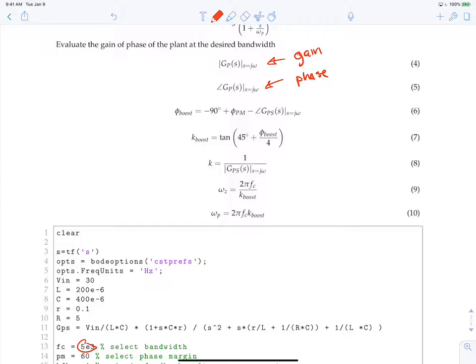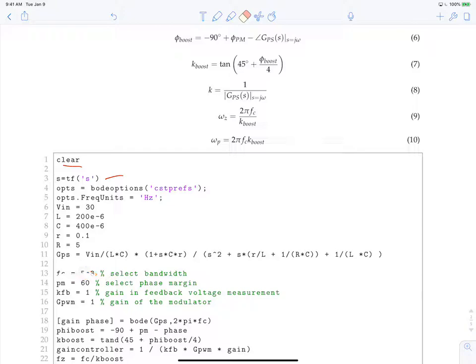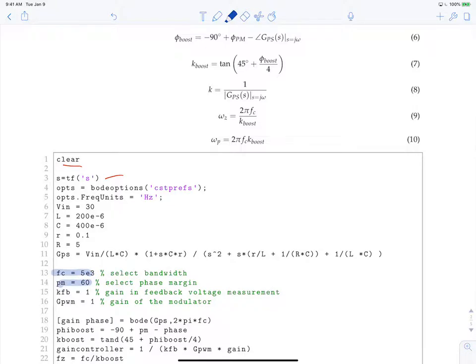I actually go ahead and do that. I'll show the first couple lines of my MATLAB script. I'm clearing everything out. I'm setting S as a transfer function. Setting some options for the Bode plot. I just want it to be in hertz instead of radians, which it defaults to. Setting my initial conditions or parameters for the converter, which I defined at the beginning. And then, line 11 essentially here is defining the transfer function of the plant, which we have defined up above. And then, we're going to define our bandwidth, our phase margin. And we're going to go ahead and calculate the phase. What we have here is line 18. We'll take the Bode of GPS, which was defined right here. And guess what we're going to pass in? We want to get the gain in phase back at a single point. And that is right here, 2 pi fc, where fc is 5 kilohertz.